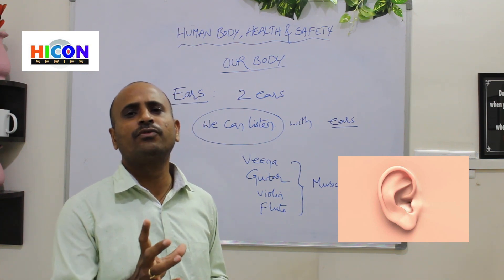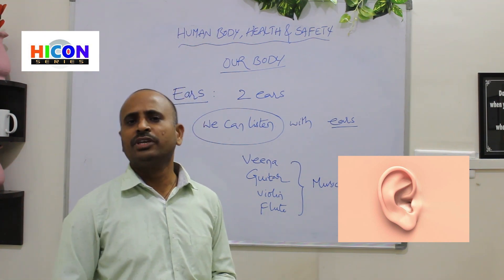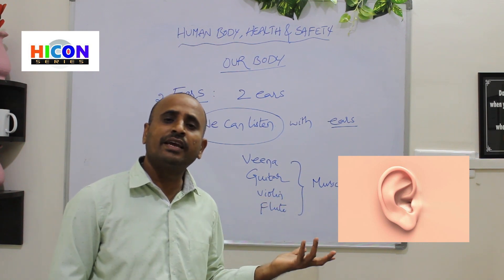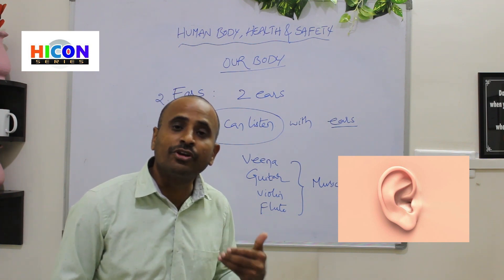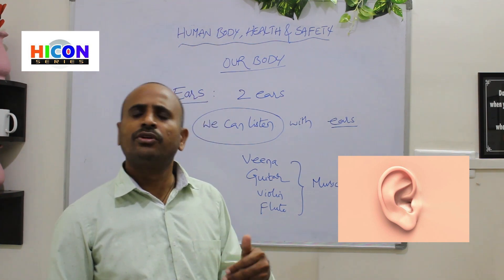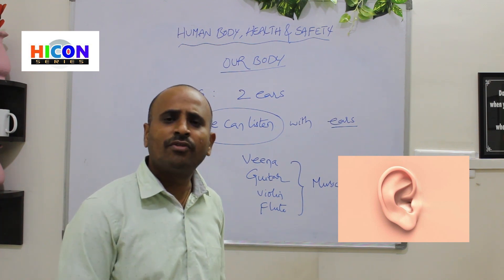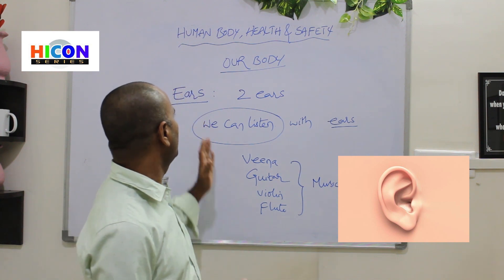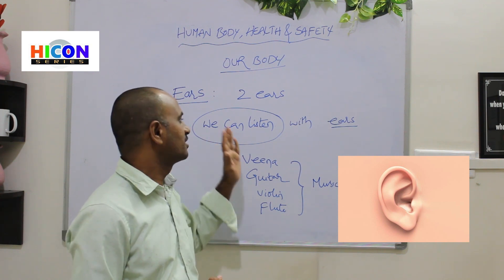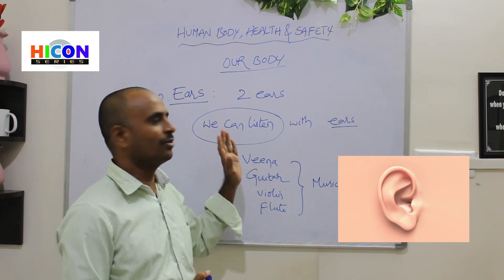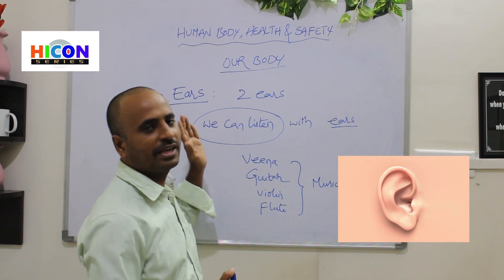Ears are very helpful and we can identify objects even though we have no eyes. Blind people can even walk on the road just by listening to sounds and can identify objects that way. The main function of ears is listening — we can listen with our ears.